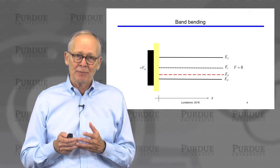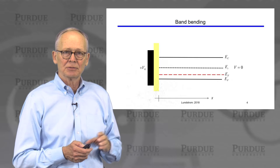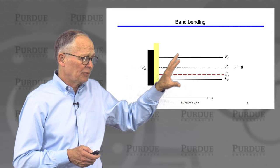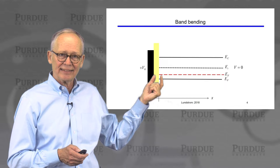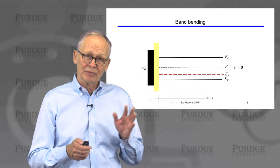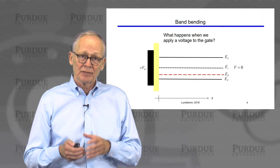Now when we make a MOS transistor we will make a metal-oxide-semiconductor structure. Let's ask ourselves what would happen if we applied a positive voltage to this gate electrode. The semiconductor will stay in equilibrium because we have this insulating gate oxide — current can't flow through that insulator, so there's no current flowing. The semiconductor stays in equilibrium, the metal stays in equilibrium, and the Fermi level is flat even when we apply a voltage.